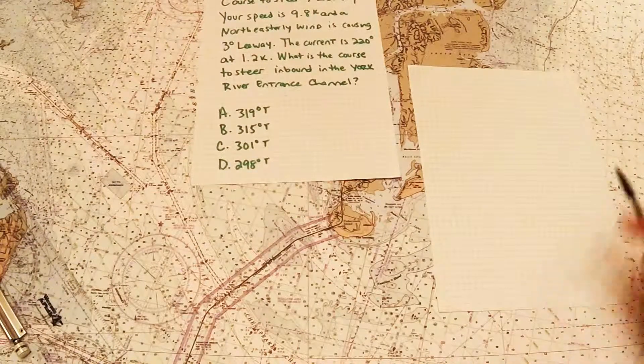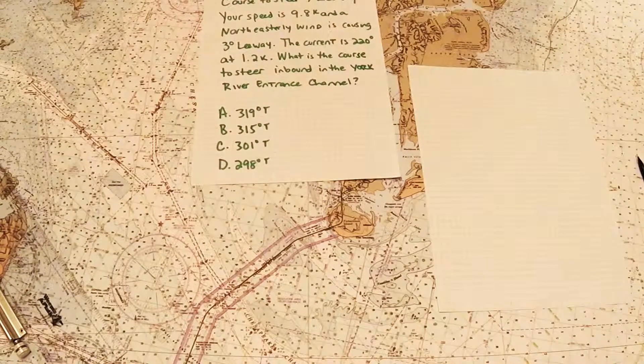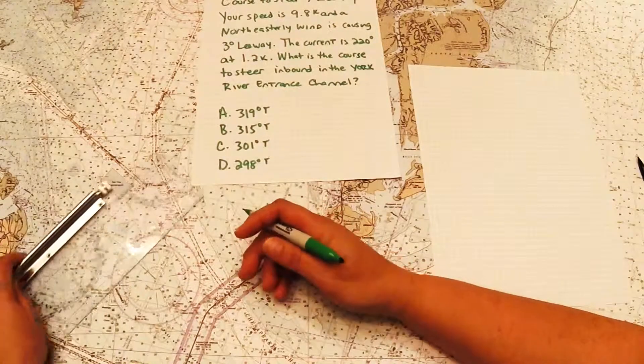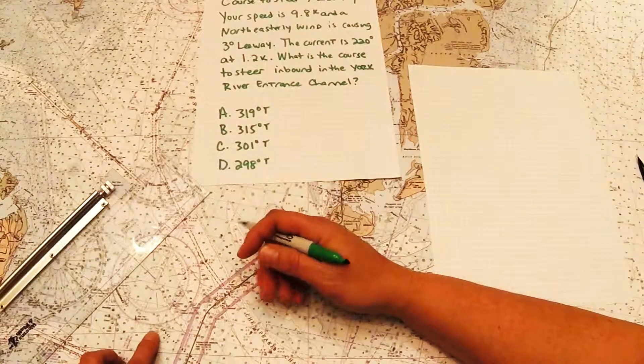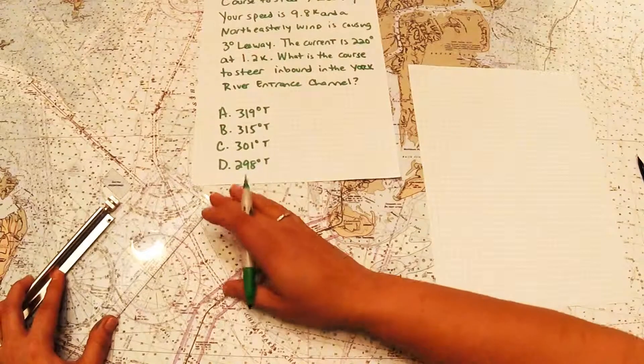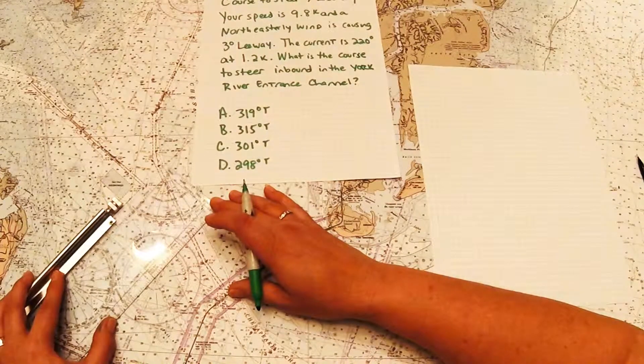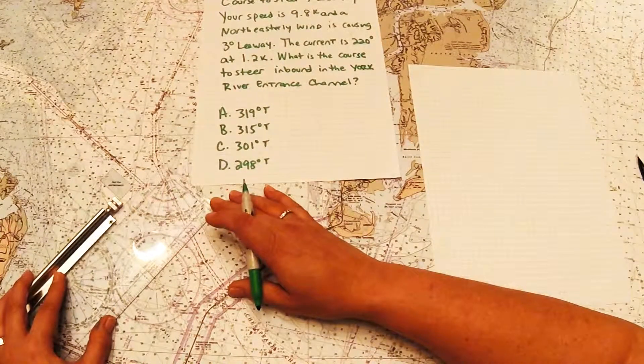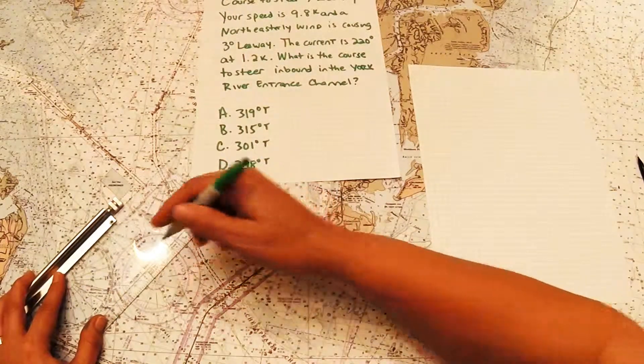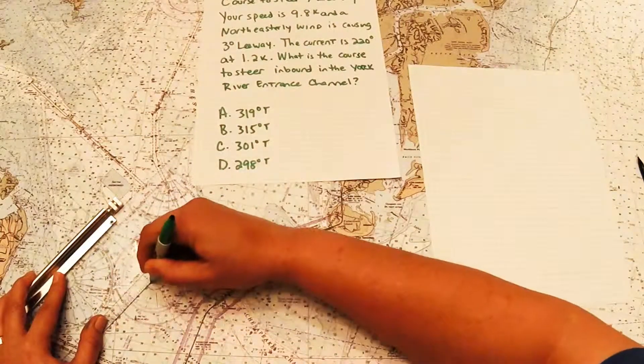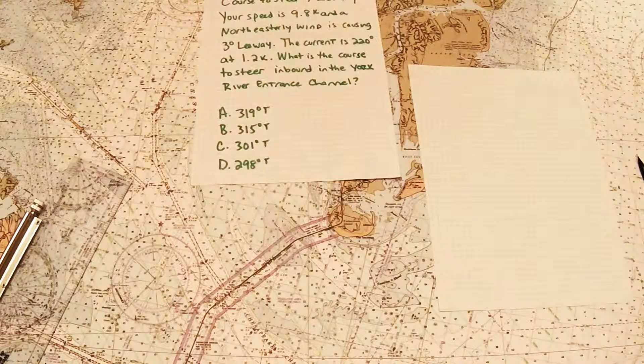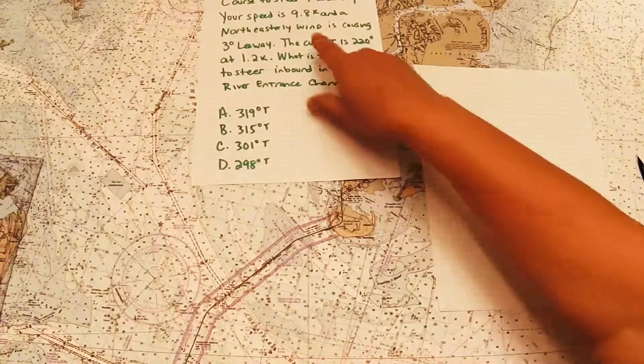Now, it tells us next that we have a current. So the second step after you've plotted the main course is to plot the current. It says the current is at 220. So 180, 190, 200, 210, 220. So I'm going to plot from the center, because that's basically our position, 220. So from the center into the direction of 220. So I've got my line drawn there. So that's the current set line. Now I need to draw in the drift.